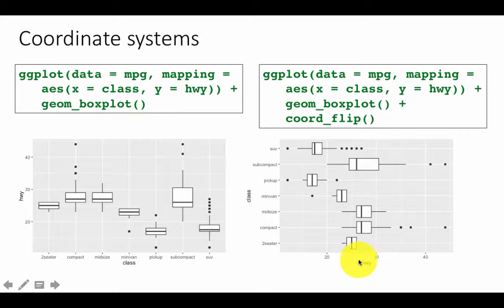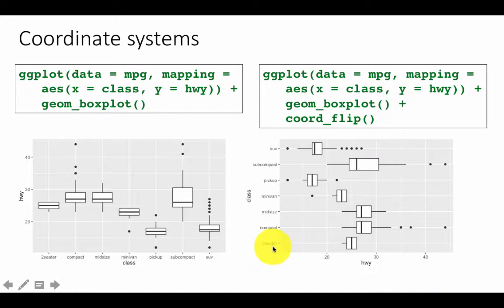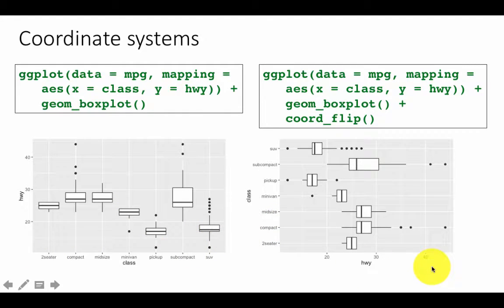To flip the coordinates, you tell the system to flip the x and y coordinates. Although x is class and y is highway normally, by saying coord_flip, whatever was on the x-axis goes to the y-axis and vice versa. Even if your class names are very large they won't overlap. The information is exactly the same, just flipped around.